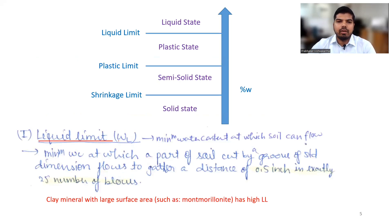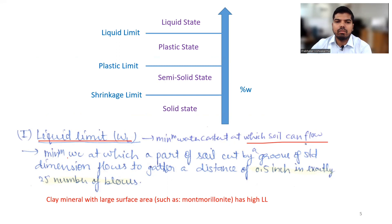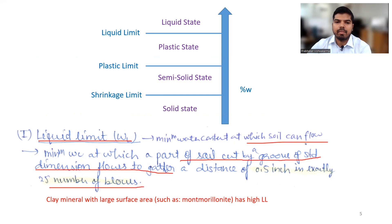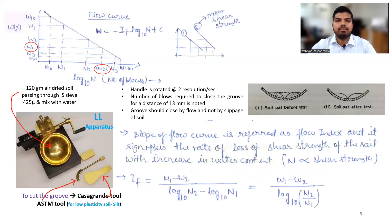Liquid limit is the minimum water content at which soil can flow. More specifically, it is the minimum water content at which a part of soil cut by a groove of standard dimensions will flow together at a distance of 0.5 inch in exactly 25 blows. Clay minerals with large surface area have a high liquid limit. Let us now understand experimentally how we calculate the liquid limit using the liquid limit apparatus.